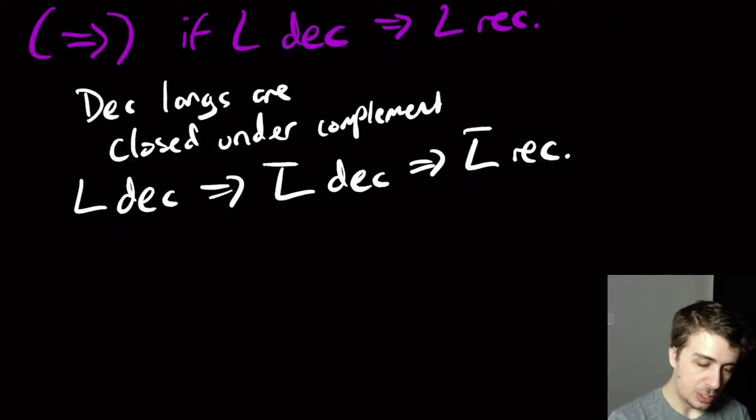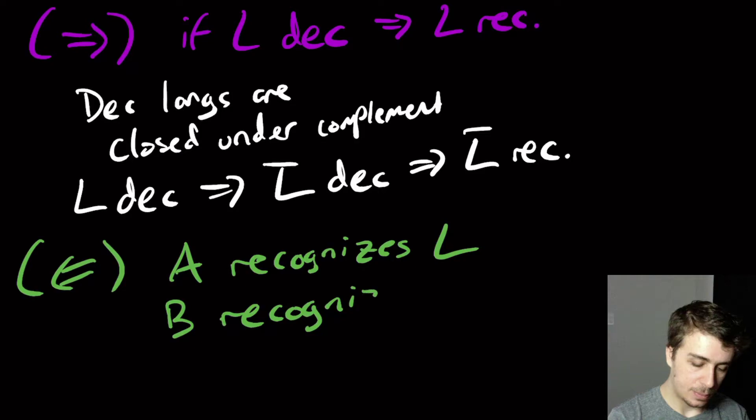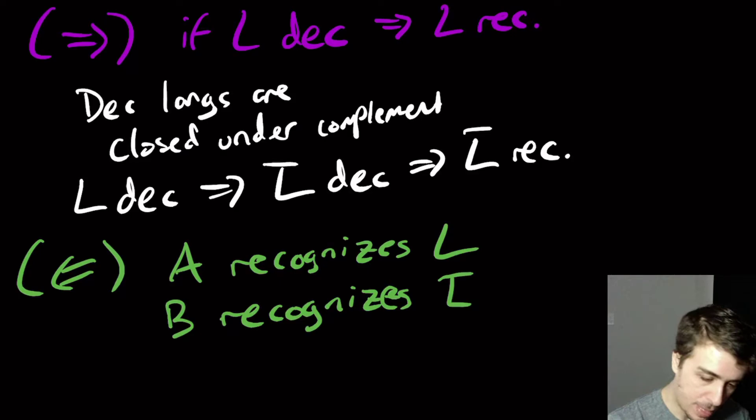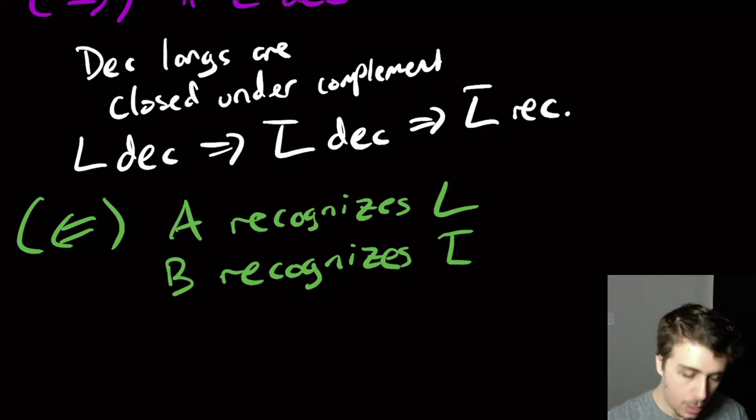The other direction is actually a little bit more challenging. So let's say that A recognizes the language L and B recognizes L bar. So let's say that we're assuming that we have the two recognizers, the one for the original language and one for the complement. And I want to make the decider for the original language. You can make it for the complement, too. It doesn't matter.